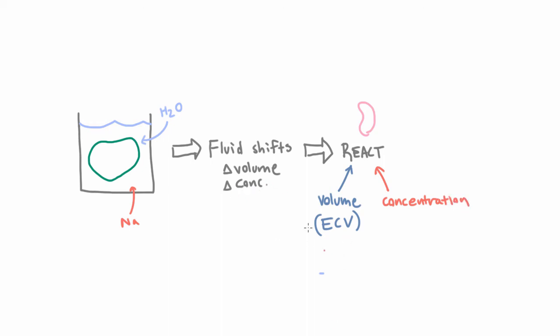Now, not only does the kidney measure these two different things, but it also reacts differently to each one. Because a change in volume is different from a change in concentration. You can think of ways that you could change the volume without changing the concentration, or ways that you could change the concentration without changing the volume.